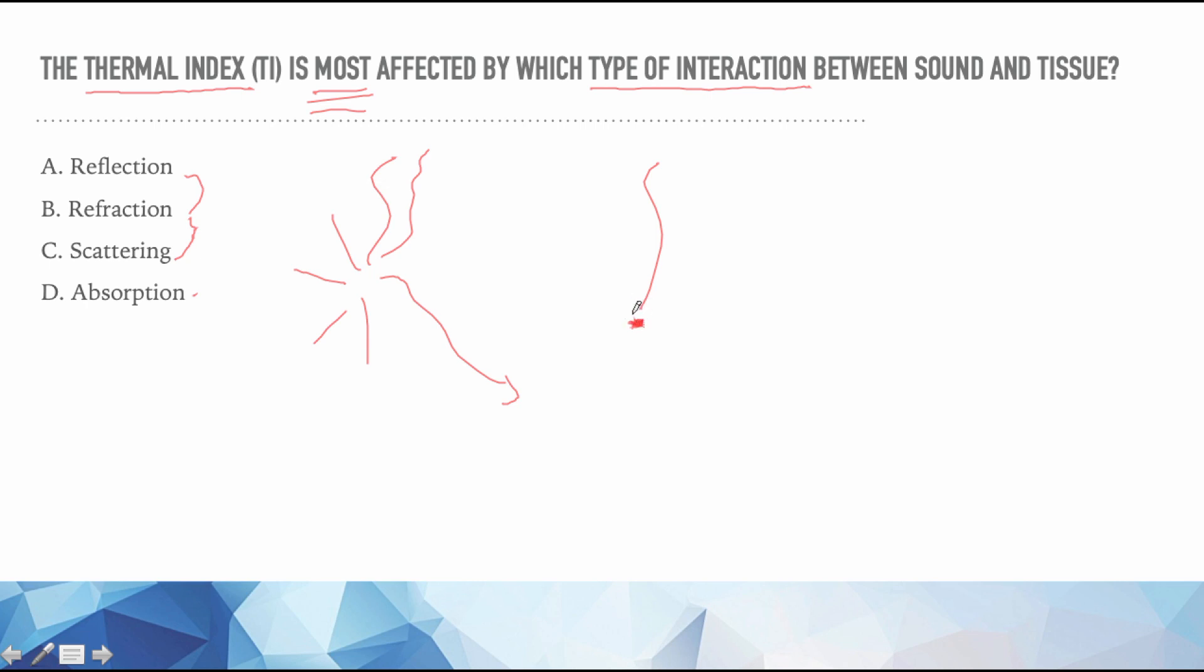The difference with absorption - the sound goes in, it hits the little piece of tissue, vibrates it whatever, but it heats it up. The energy stays in the tissue, it doesn't go anywhere else. So it's going to heat up that little piece of tissue. So to me absorption will be the interaction which most affects the thermal index because it's the one that will heat up the tissue.